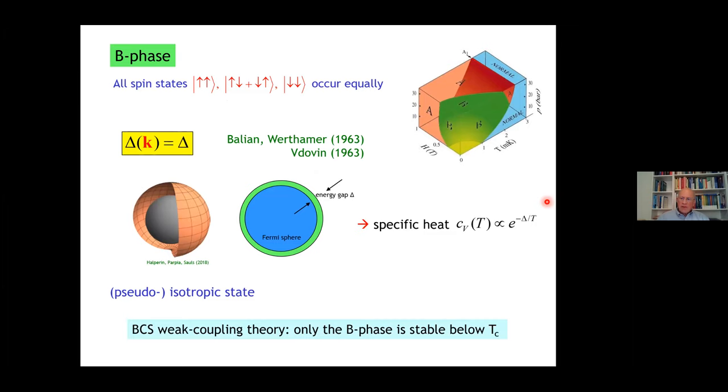First, there is the B phase, which is the largest phase, covers most of the phase diagram without a magnetic field. In that, all three spin components, up-up, up-down plus down-up, and down-down, occur equally. That's a miracle. And interestingly, although it's so complicated, the gap is isotropic as if it were a conventional superconductor. This is the projection. Because this isotropic gap protects the Fermi sphere, the specific heat vanishes exponentially as T goes to zero. This is why it's called the pseudo-isotropic state.